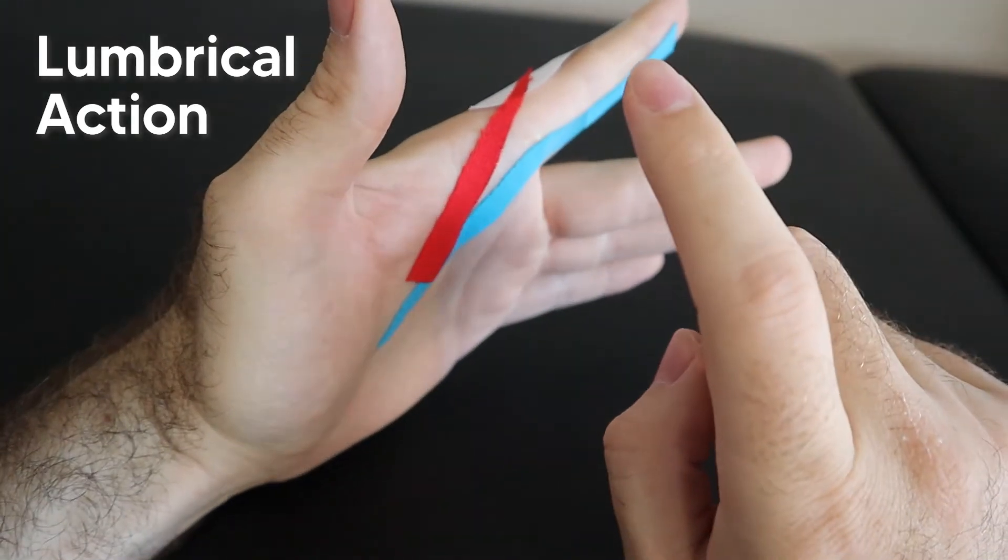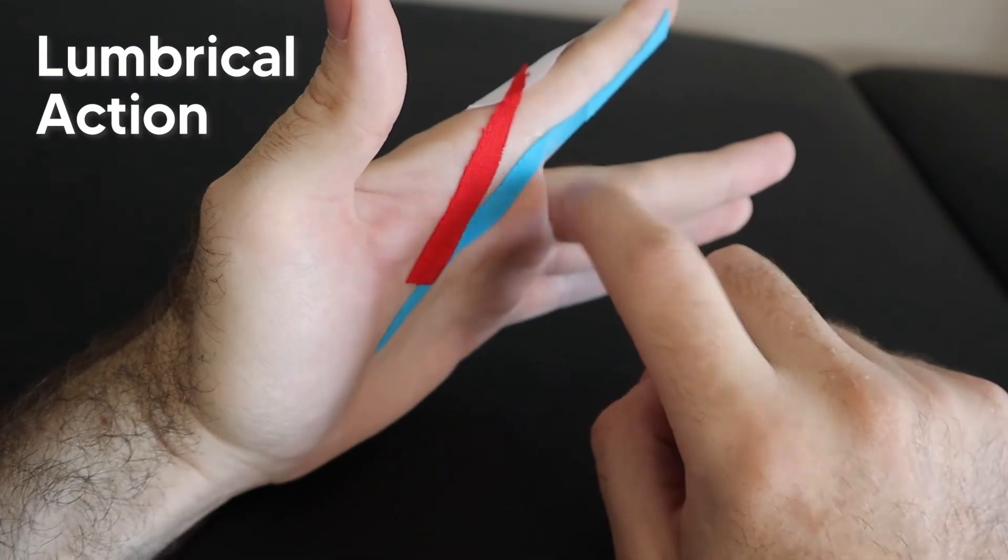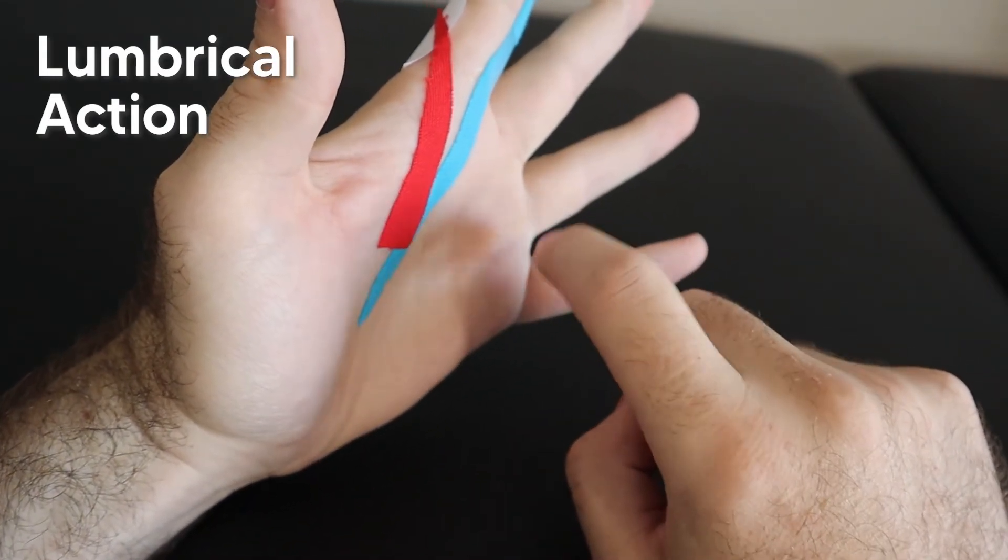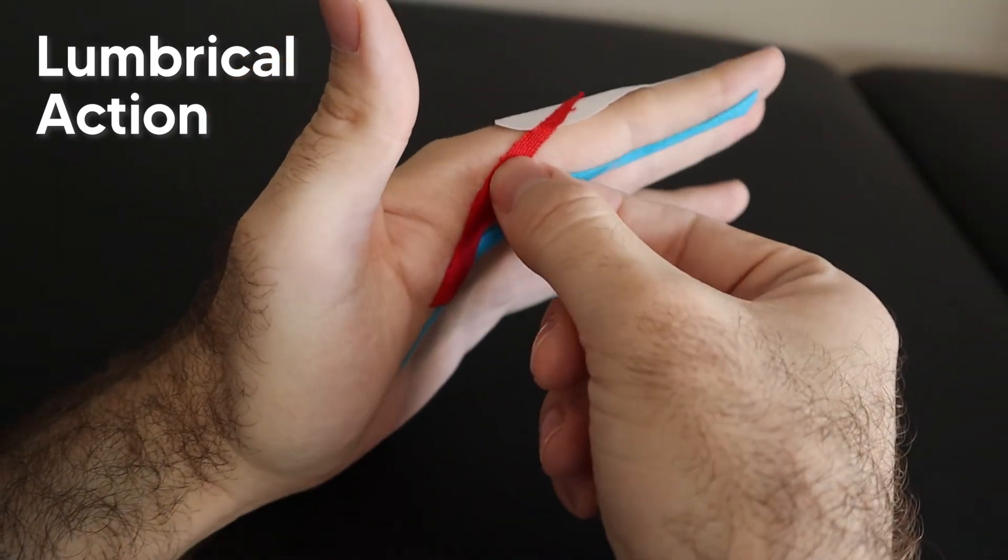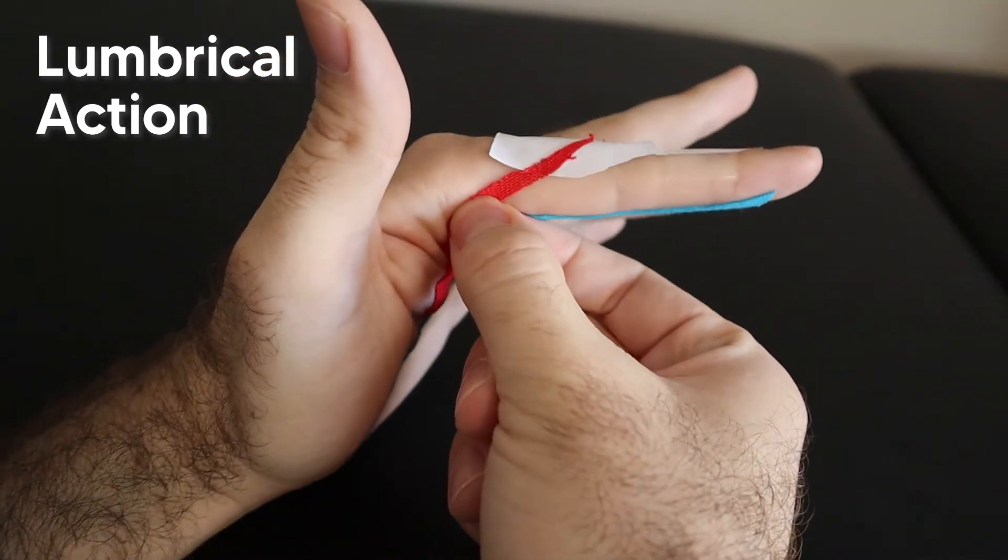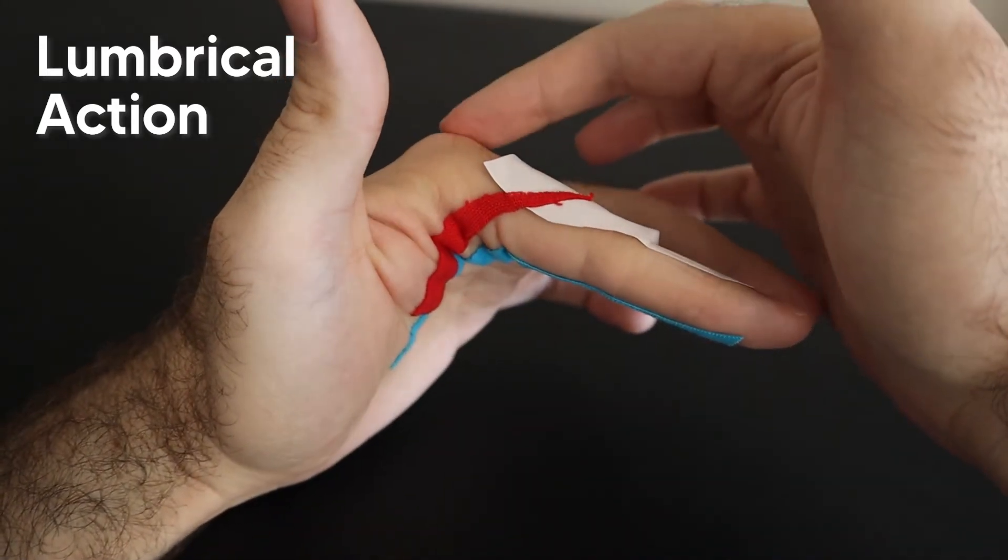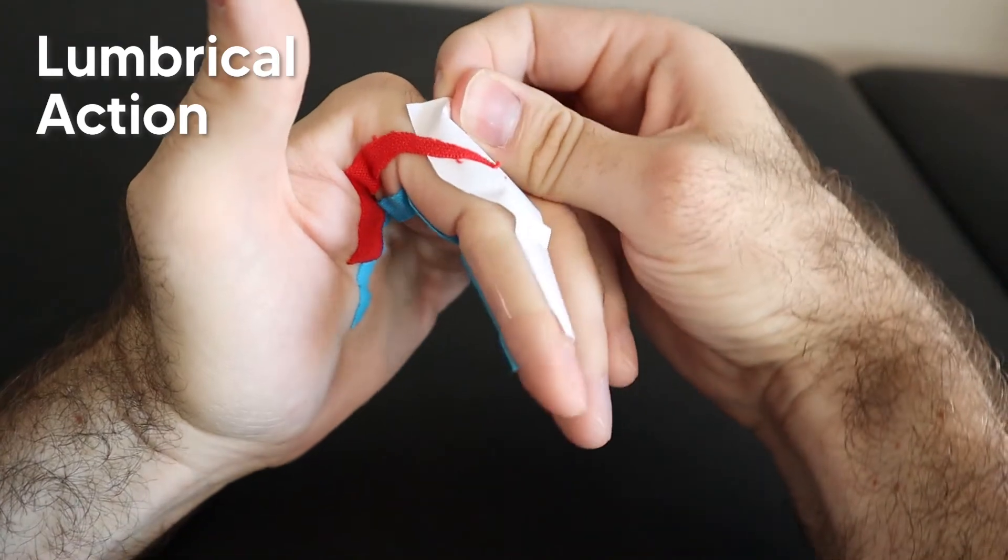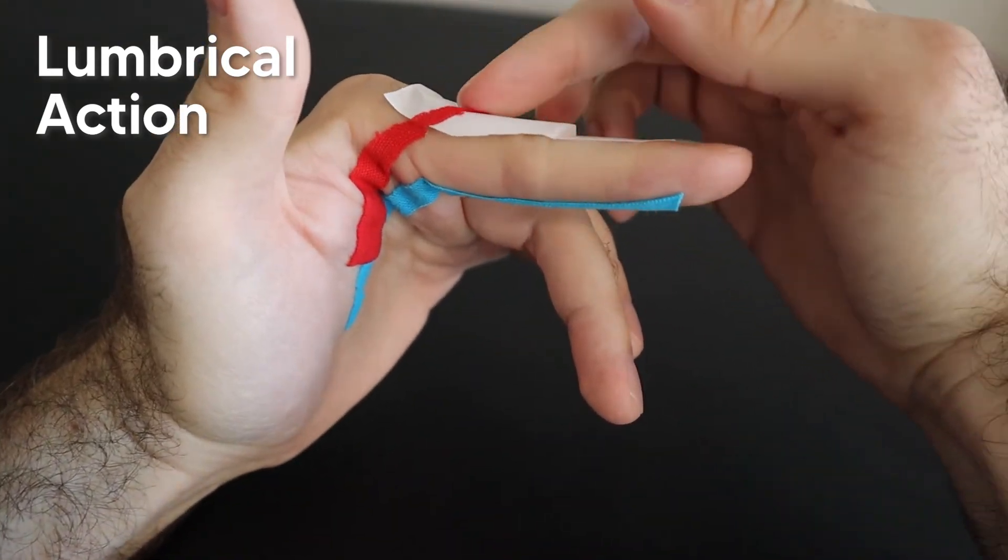So it does not insert on the proximal phalanx. It just inserts around that area on the extensor hood solely. So what it also does, the rest of the fingers also get a lumbrical. So this finger will have a lumbrical inserting there and another one inserts there and another one inserts there.